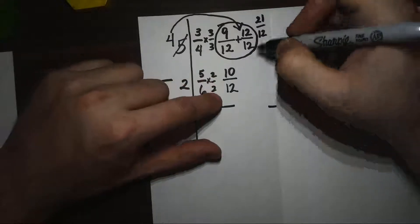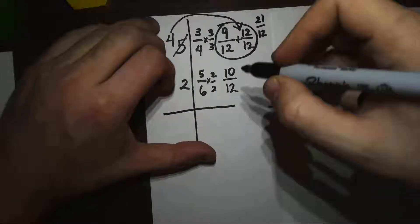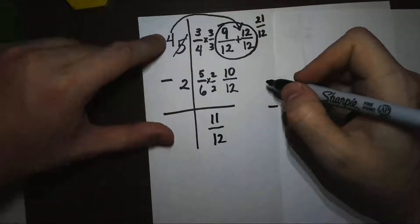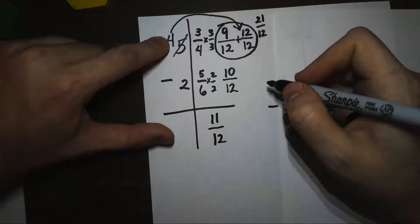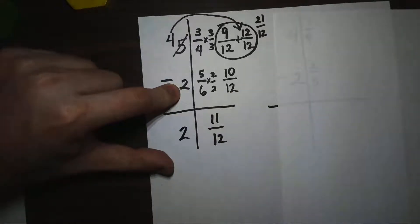Now I want to do 21/12, and I want to try to take away 10/12. 21 minus 10 gives me 11/12. And back in my whole number column, I have 4 wholes minus 2 wholes, which gives me 2 wholes. So my answer is 2 and 11/12.